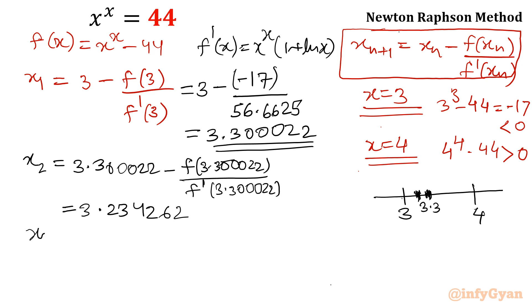3.234262. Third iteration. Same value I will write. 3.234262 minus f of 3.234262 over f dash of 3.234262.